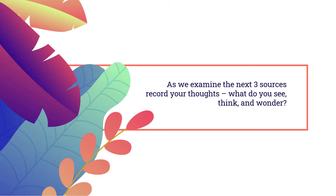As we examine the next three sources, record your thoughts in the see/think/wonder table on your worksheet. These are your initial observations — we've been doing this all year. You cannot write 'I don't have any' — that's a cop-out. Write down something you see, think, or wonder. It cannot be just two or three words; you need to record real observations after looking at these images.